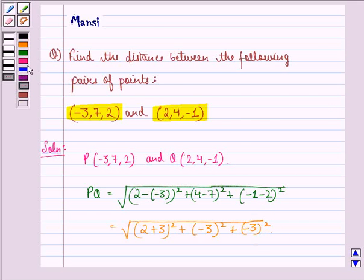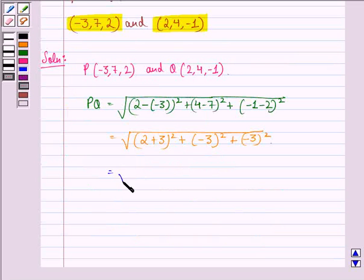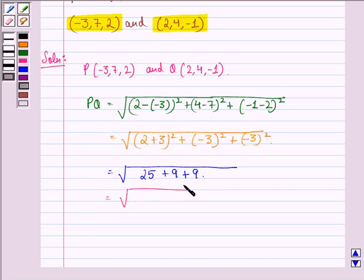This is equal to square root of, now 2 plus 3 is 5 and square of 5 is 25, square of -3 will be 9, again square of -3 will be 9. This is equal to square root of 25 plus 9 plus 9, that is 43, so square root of 43.